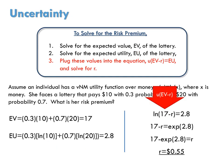Now plug these values into the equation, which says the utility of EV minus R. Here the utility is the log of X, where X is EV or 17 minus R, equals the expected utility of the lottery, which is 2.8. To solve for R, we apply the exponential function to both sides of this equation, and then do a little bit of algebra to arrive at an R of 55 cents.